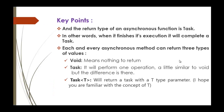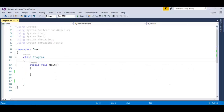Now let us understand what an asynchronous method is going to return. It returns three types: void, Task, and Task of a generic type. An asynchronous method returning void means it does not return anything. It can also return Task or Task of a generic type. Without wasting much time, let us jump into coding.